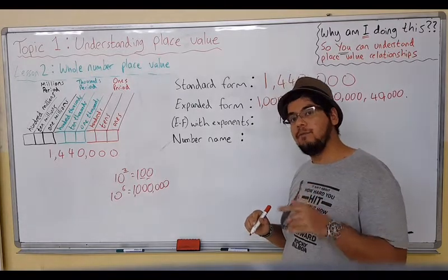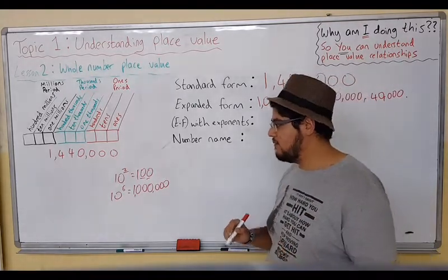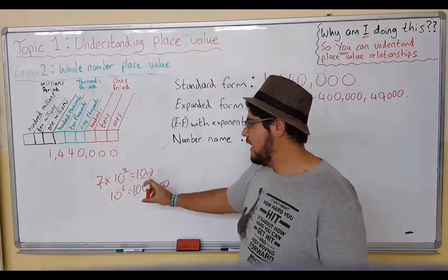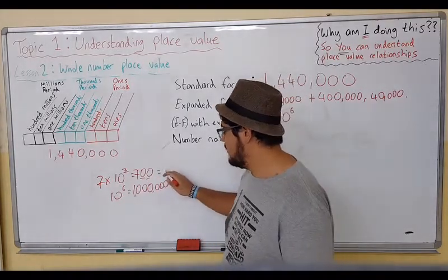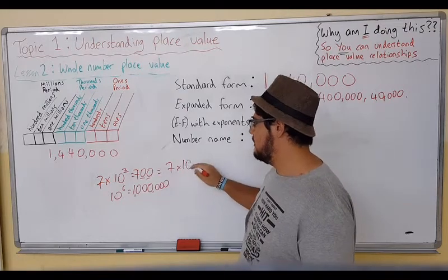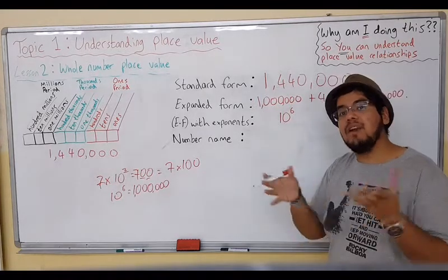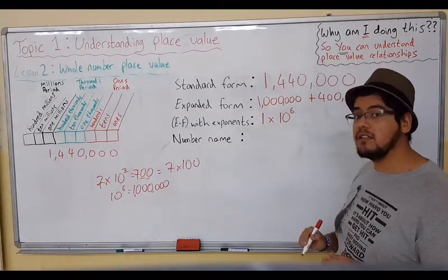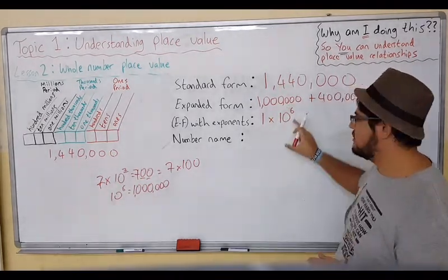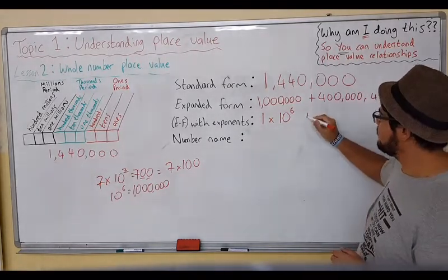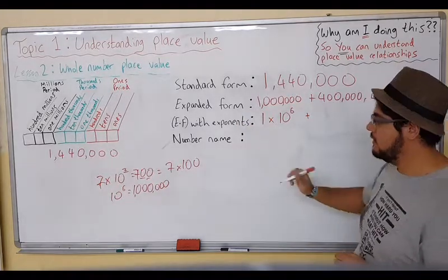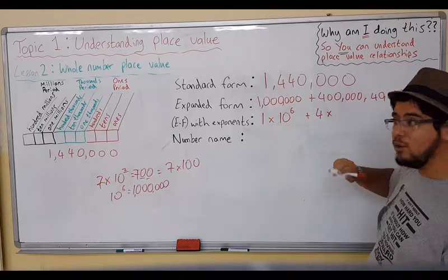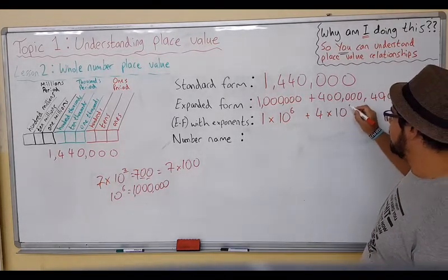So one million becomes one times ten to the six. The same pattern applies to the next term: we take out the four, and we have a hundred thousand. How many zeros? One, two, three, four, five — so it's four multiplied by ten to the power of five. And the last term: four times ten — how many zeros? One, two, three, four — so it's four times ten to the power of four.